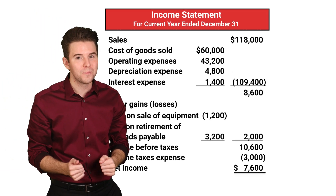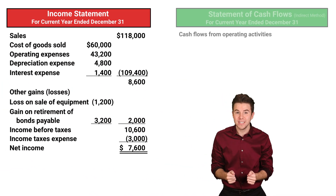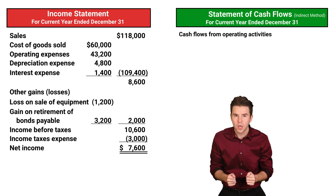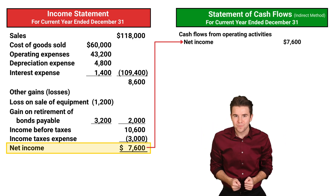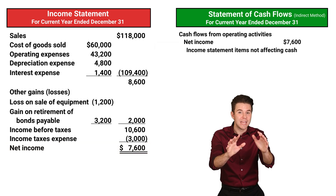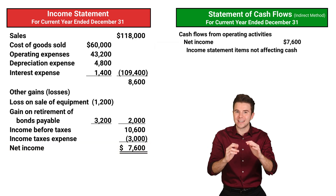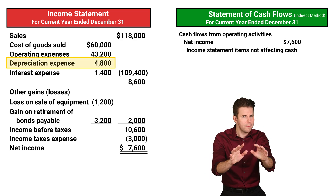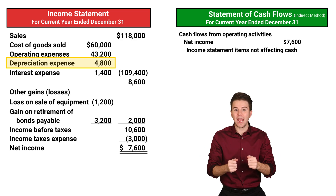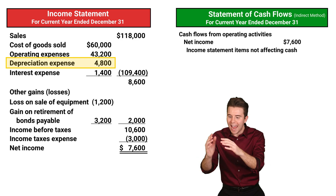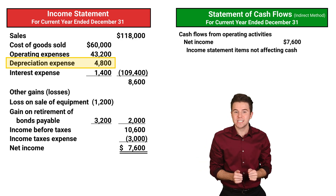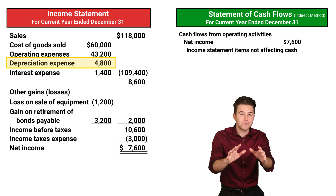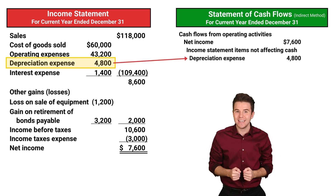I think this will make more sense with an example. Assume a company prepared the income statement shown here. To start preparing the operating activity section of the statement of cash flows, we begin by listing net income. Next, we have to adjust net income for income statement items that don't affect cash. The first one we see is depreciation. Remember, depreciation expense does not include a payment of cash — it is simply allocating the cost of a plant asset over several years.